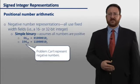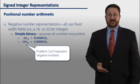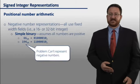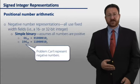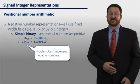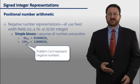So how do we represent negative numbers? Well, in simple binary, we assume that all numbers are positive. And so here we have two representations of numbers, 66 and 194. And notice that these numbers only differ in the most significant bit, that is the one on the leftmost side. The problem is that when we use a simple binary representation, we can't represent negative numbers.